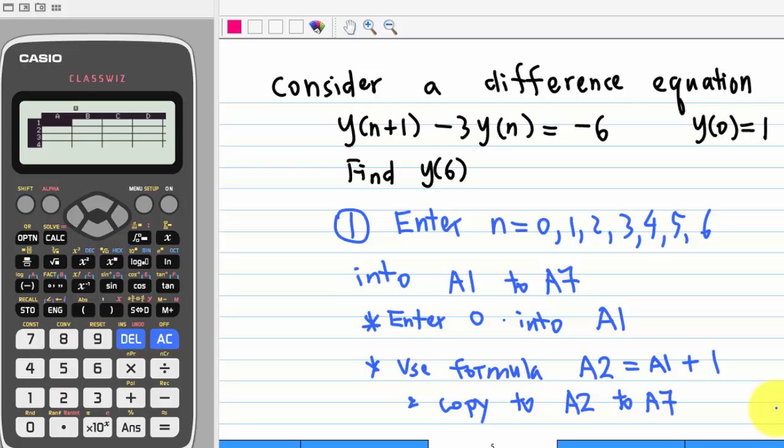Next, we are going to enter n=0,1,2,3,4,5,6 into A1 to A7. To do this, we enter 0 into A1 and then use a formula A2=A1+1 and copy it to A2 to A7.